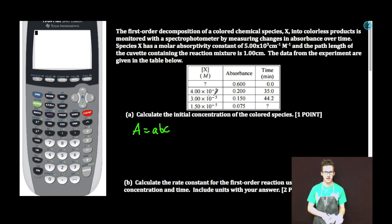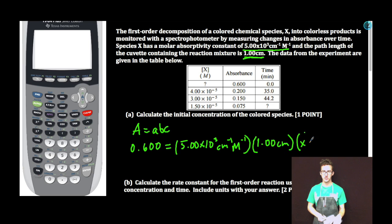Our absorbance of that initial concentration is 0.600 equal to the molar absorptivity constant. Don't panic, it's given to us. Times our path length, 1.00 centimeters. Solving for concentration. Calculator: 0.600 divided by 5.00 times 10^3 times 1.00. Concentration equals 1.20, watch your sig figs.